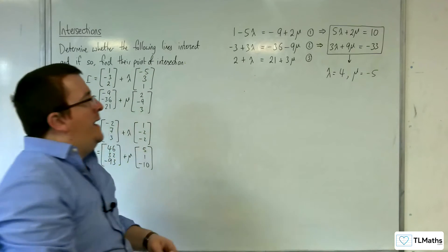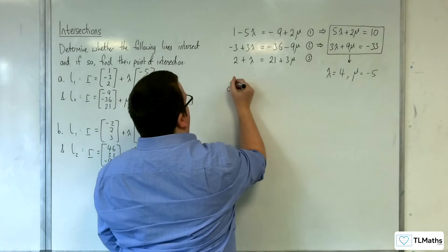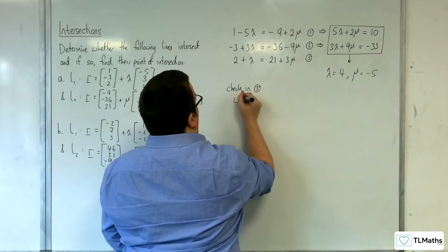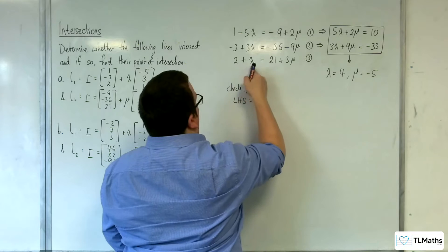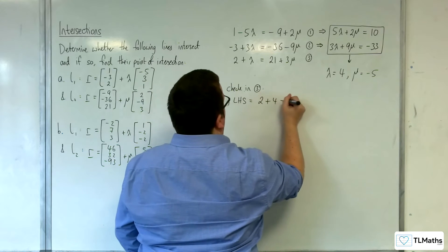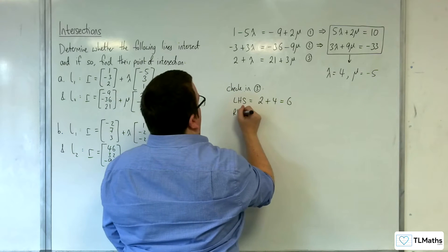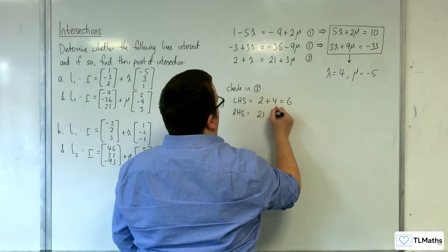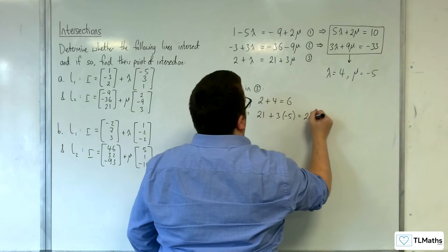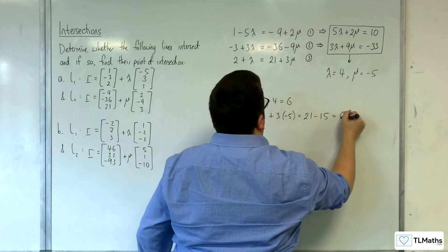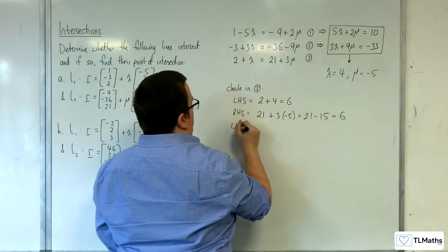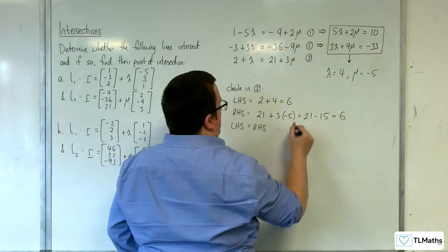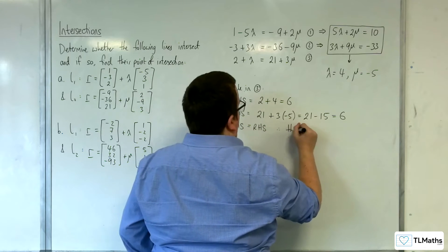Now what we want to do is check in equation 3. So the left-hand side is 2 plus λ, so 2 plus 4, which is 6. And the right-hand side is 21 plus 3 lots of μ, so 21 plus 3 lots of minus 5, which is 21 take away 15, which is 6. So the left-hand side equals the right-hand side, therefore the lines intersect.